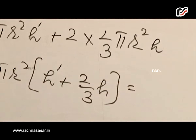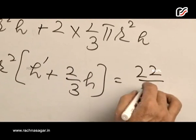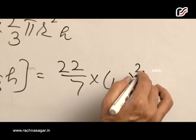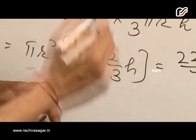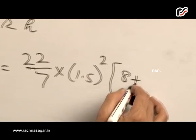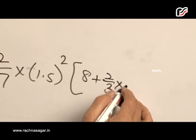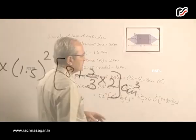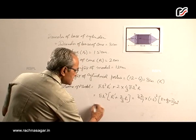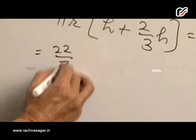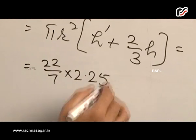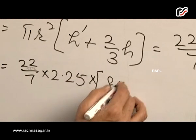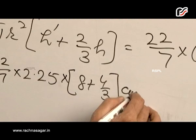We put the values 22/7. R is 1.5 whole square. So h dash is 8 plus 2/3 times 2, and this is centimeter cube. So this equals 22/7 times 2.25 times 8 plus 4/3 centimeter cube.